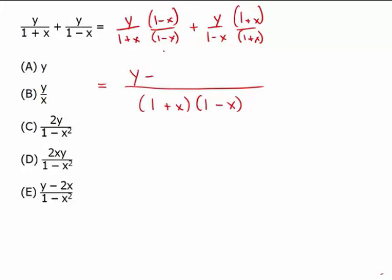We get a y, we get a minus xy, we get a plus y, and we get a plus xy. And so the numerator, we get y plus y, which is two y, and these two terms cancel. So we just get two y in the numerator.